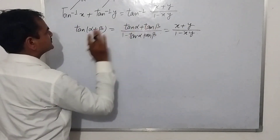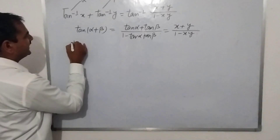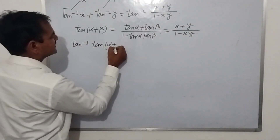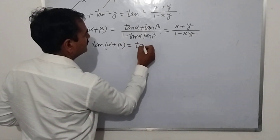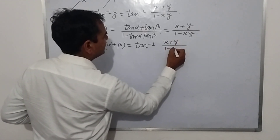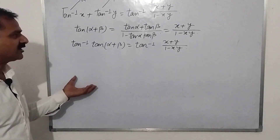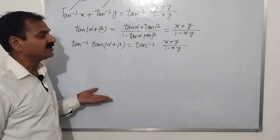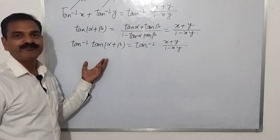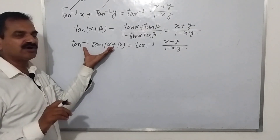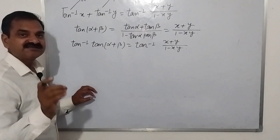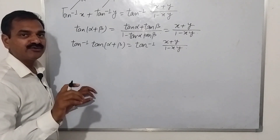Now I take the inverse of both sides: tan⁻¹(tan(α+β)) equals tan⁻¹ of (x+y)/(1−xy). The problem starts here — can I write tan⁻¹(tan(α+β)) simply as α+β? I can write α+β only when α+β lies in the range minus π/2 to π/2, which is the principal range of tan inverse.